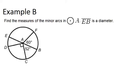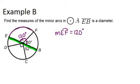In example B, find the measures of the minor arcs in circle A. EB is a diameter, meaning it's a straight line that goes all the way across and cuts the circle in half — each half is 180 degrees. So if this angle is 60 degrees, the other must be 120 degrees since they add up to 180. That gives us arc EF = 120 degrees and arc FB = 60 degrees.